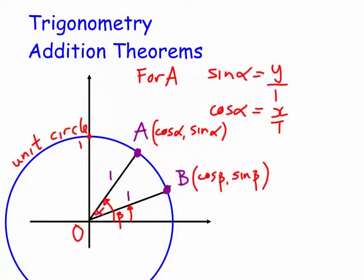Welcome to Maths with Bob. Today we're looking at the addition theorems in trigonometry — the sine(α+β), cos(α+β), and tan(α+β) results. These lead to the double angle results, the half angle results, and eventually to the t-results, which we use a lot for calculus integration.